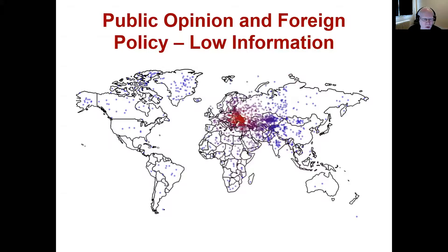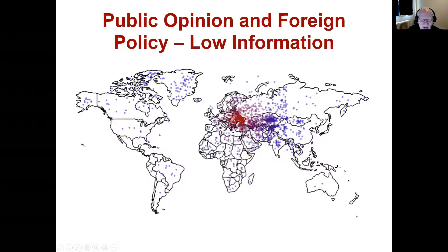This map shows everybody's response — each dot means a response, and the brighter the red means higher density of response. A few things are noticeable. A lot of people did fairly well — you can see where the red is, many people were in the area and were fairly close to Ukraine. You can't necessarily judge people if they don't know exactly where Ukraine is.